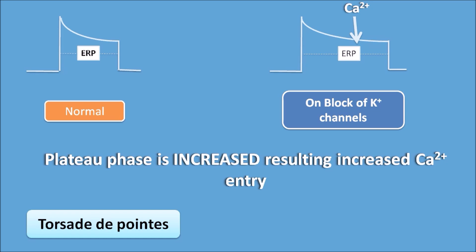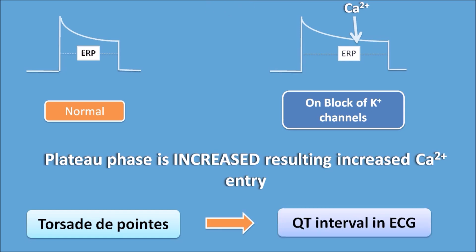Abnormal calcium accumulation in the heart can precipitate a fatal arrhythmia called torsades de pointes, which can be observed as an increased QT interval on the ECG. Class 1A drugs increase the QT interval, thereby precipitating torsades de pointes. These drugs should be carefully co-administered with other drugs that are also proarrhythmic and can increase the QT interval.